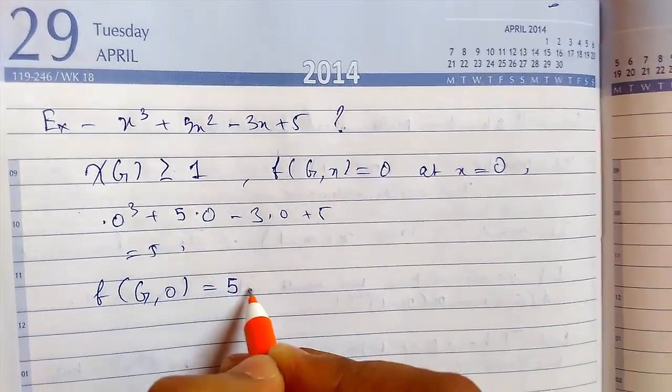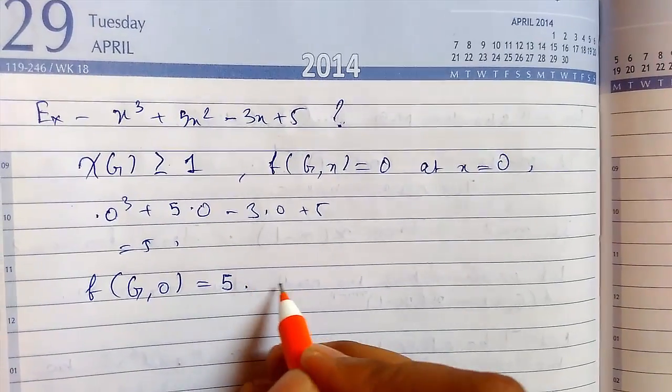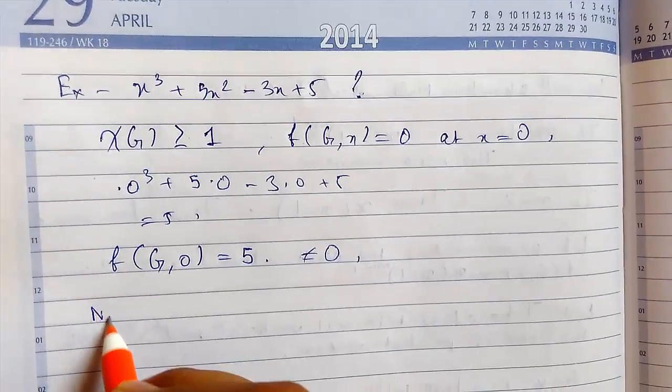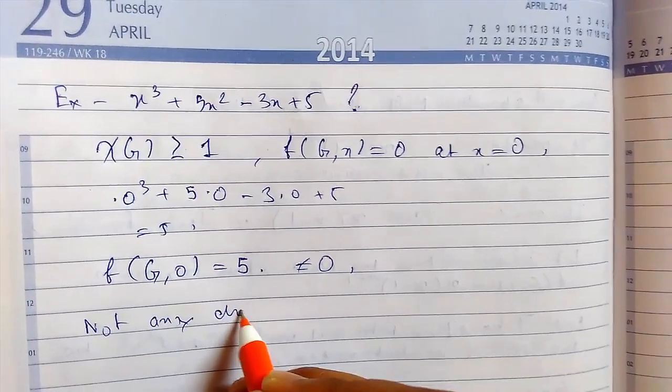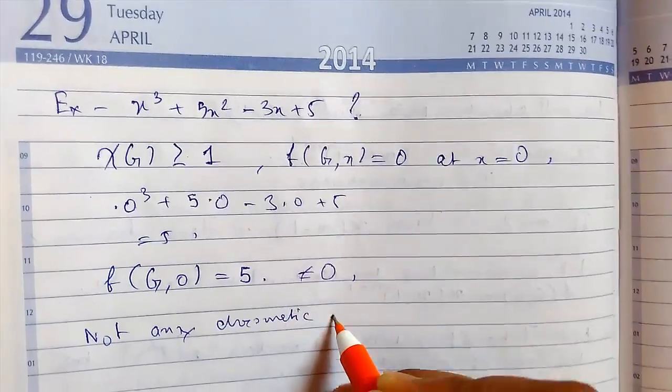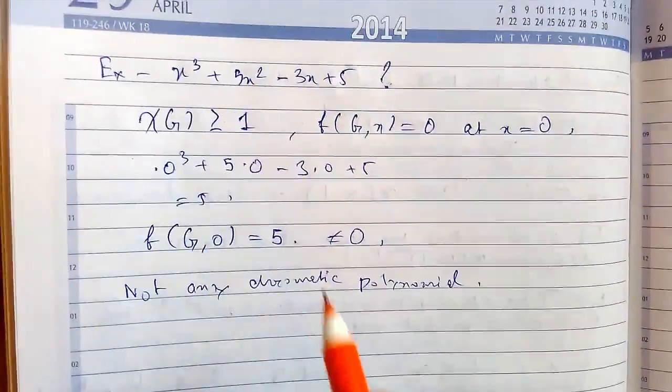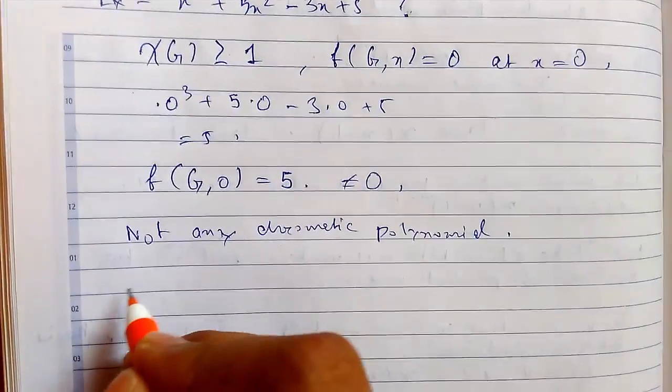Since it is not equal to 0, it cannot be any chromatic polynomial of any graph. So this expression or polynomial is not valid. So next example.